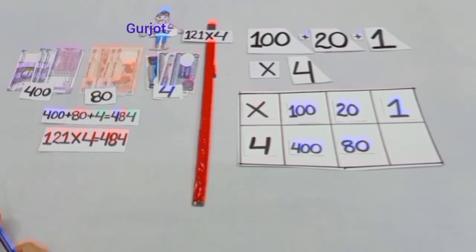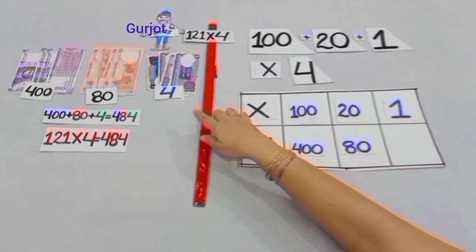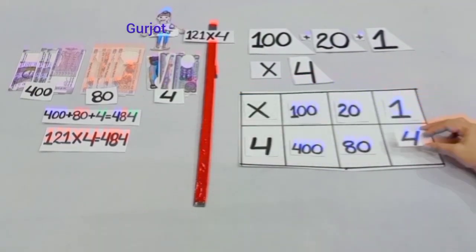And yesterday, we had 4 notes of Rs. 1 means 4 Rs. And today, when we will multiply 1 by 4, we will get 4.